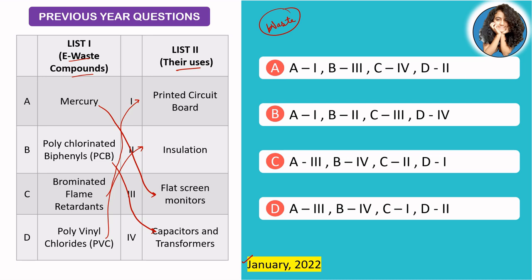If we look at option A third, these two are already cancelled. After B fourth, both of them have been given. So you have to choose between C and D. Using process of elimination, the D option is correct.